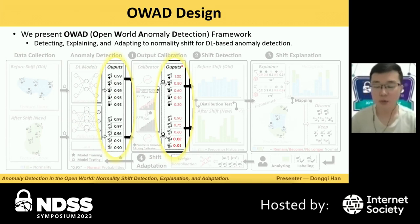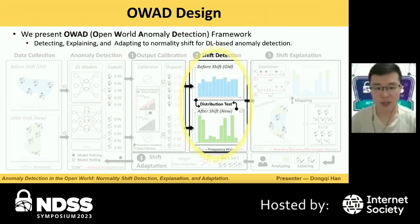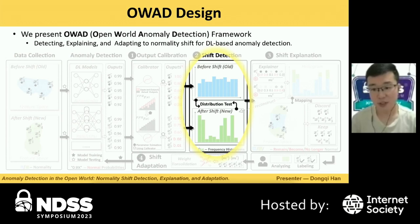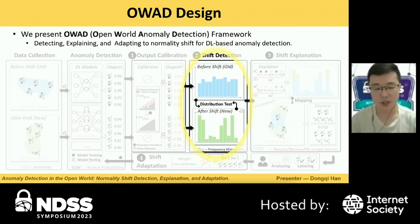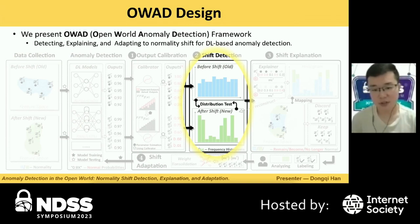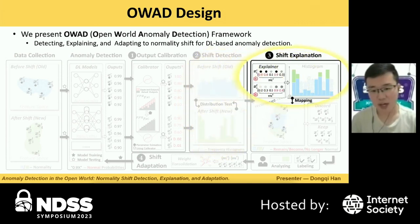In practice, there won't be only five samples, so we need to compare two distributions of calibrated outputs more rigorously. That's why we introduce the second step: shift detection. Here we conduct a hypothesis test on whether two sets are from the same distribution and use the p-value to determine whether there is a shift, which is common practice in statistics. In this example, the normality has clearly shifted.